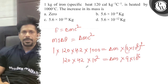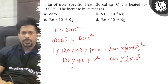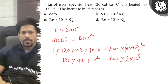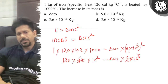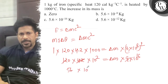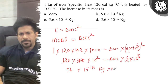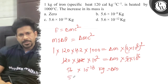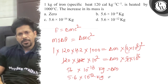So children, let's work this out fully. Computing the numerator: 1 × 120 × 4.2 × 1000 gives approximately 504,000. Dividing by 9 × 10¹⁶, we get Δm ≈ 5.6 × 10⁻¹² kilogram. So Δm = 5.6 × 10⁻¹² kg.